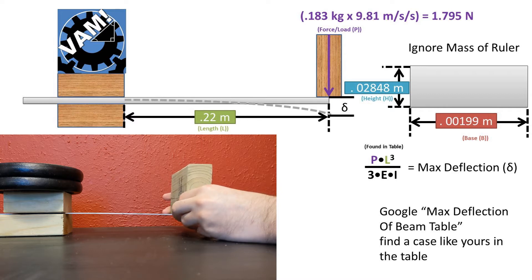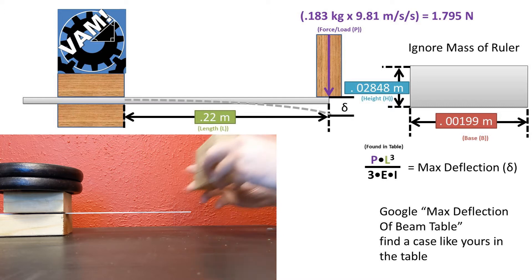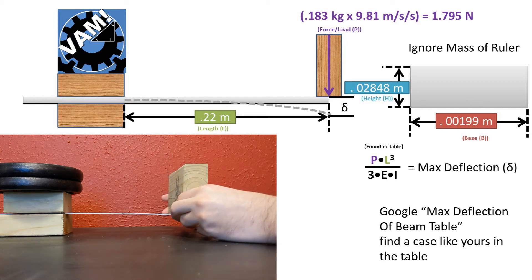Doing so, we get that the deflection should be equal to the load times the length of the cantilevered beam cubed divided by 3 times the modulus of elasticity of the material times the planar moment of inertia of the cross-section of this ruler.